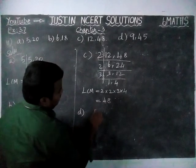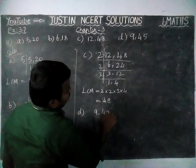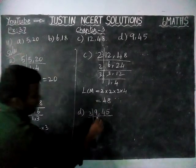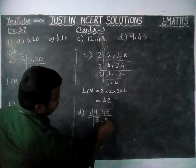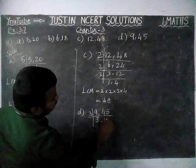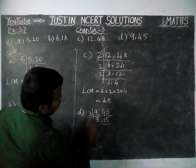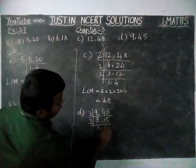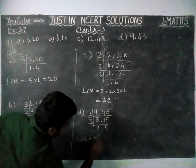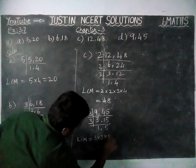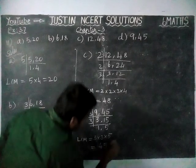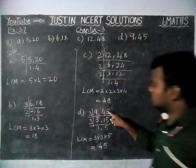Next, option D: 9 and 45. We are going to divide it by 3. 3, 3s are 9. In 45, 1, 3 is there. Remaining 15. 5, 3s are 15. Now we are going to divide it by 3. 1, 3 is 3. 5, 3 is 15. So LCM is equal to 3 into 3 into 5, is equal to 3, 3s are 9; 9, 5s are 45. So 45 is the larger number in the given value.